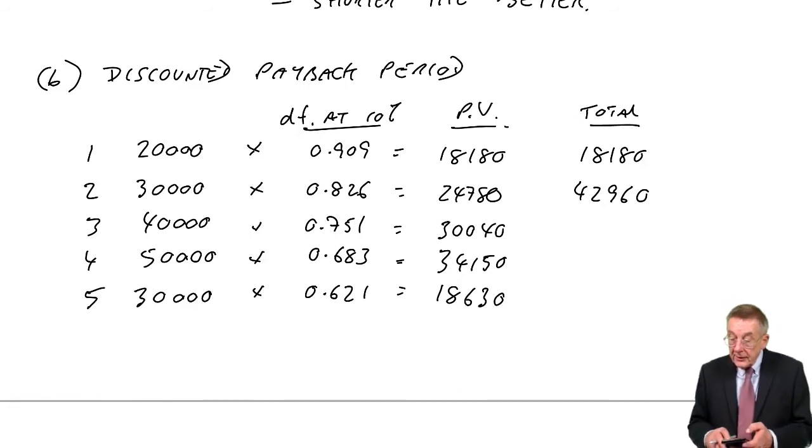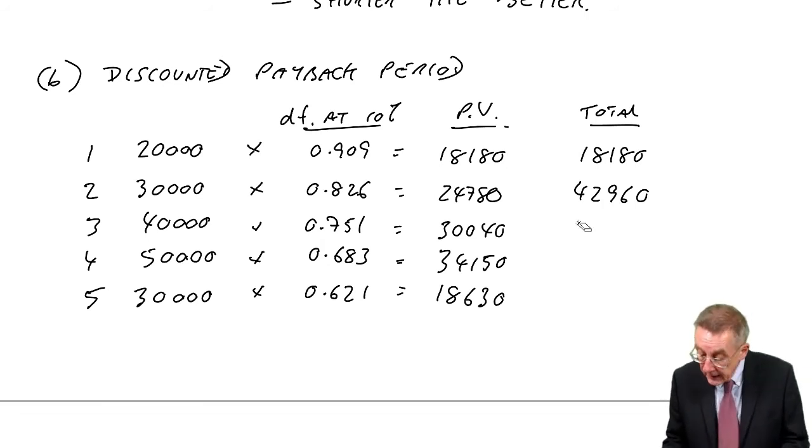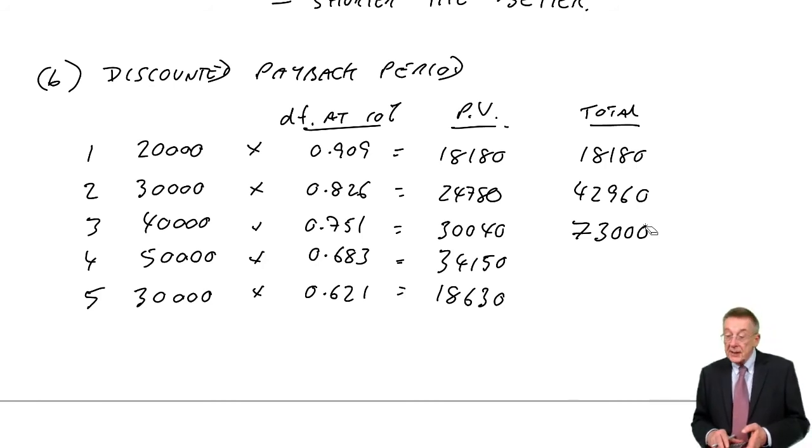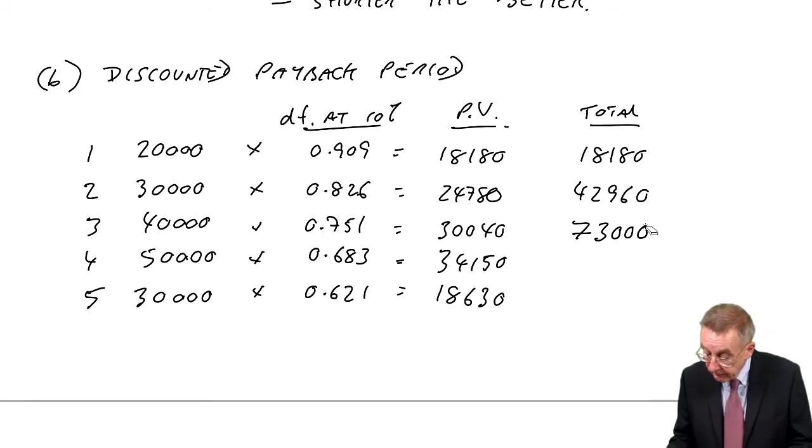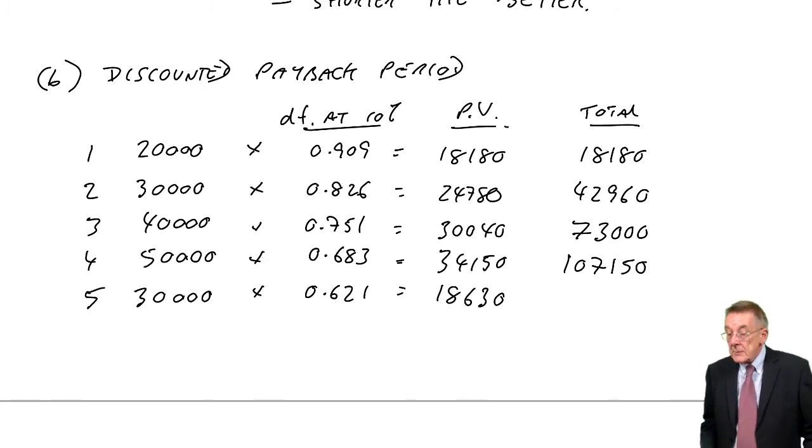In the third year, 30,040 extra. So we had 42,960, and adding 30,040, we've now got 73,000. So we're getting closer. In the fourth year, another 34,150. So we had 73, and adding 34,150, we get 107,150. So we've got there.